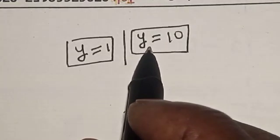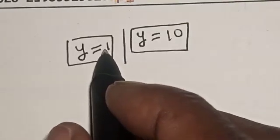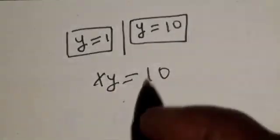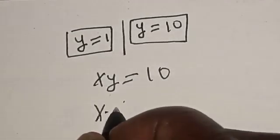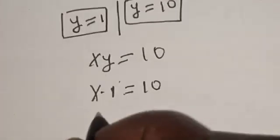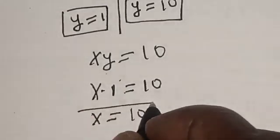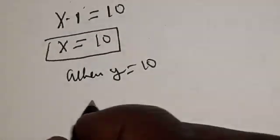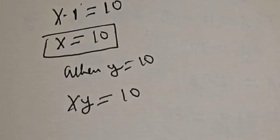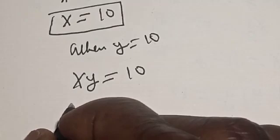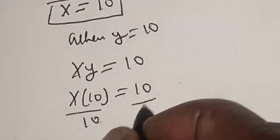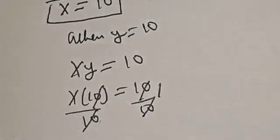Since y is equal to 1 and y is also equal to 10, let's substitute to get the value of x in either equation — I'm going to use equation 2. Our equation 2 is xy is equal to 10. At y equal to 1, we have x multiplied by 1 is equal to 10, so x is equal to 10. Also, when y is equal to 10, we have x multiplied by 10 is equal to 10. Dividing both sides by 10, x is equal to 1.